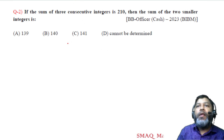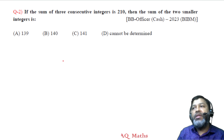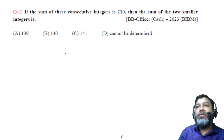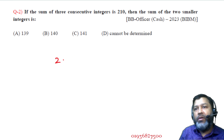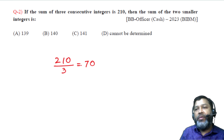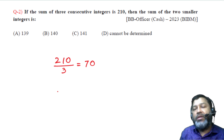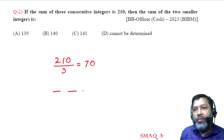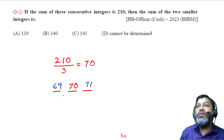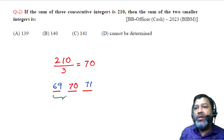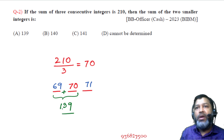Question number 2: If the sum of 3 consecutive integers is 210, then the sum of the 2 smaller integers is what? Since the sum of 3 consecutive integers is 210, their average is 70, so the middle number is 70. The three numbers are 69, 70, and 71. The sum of the 2 smaller integers is 69 plus 70, which is 139. The answer is option A.